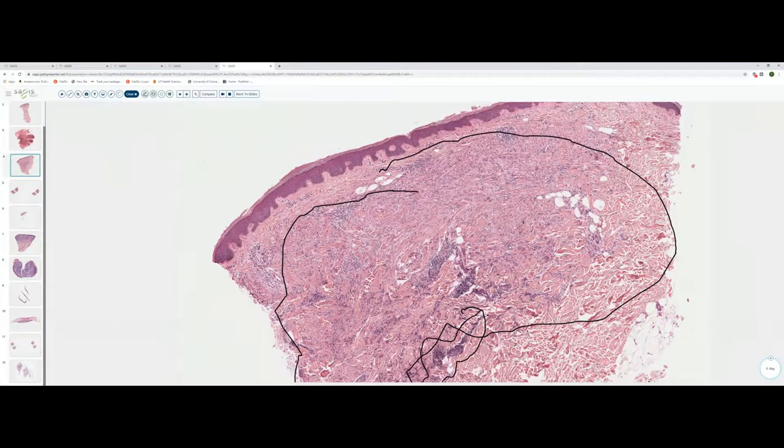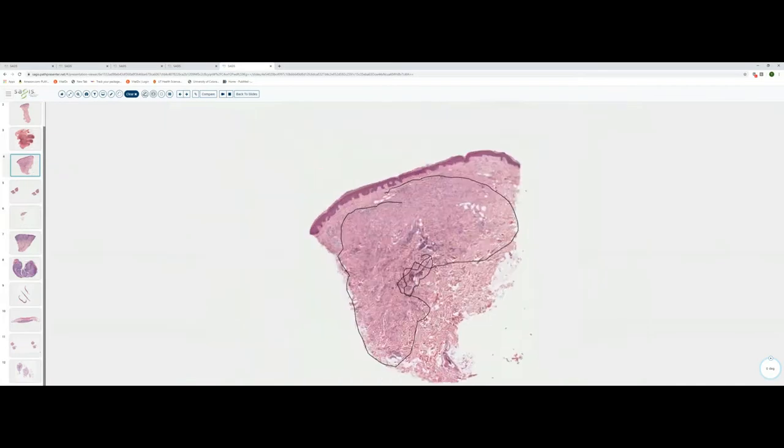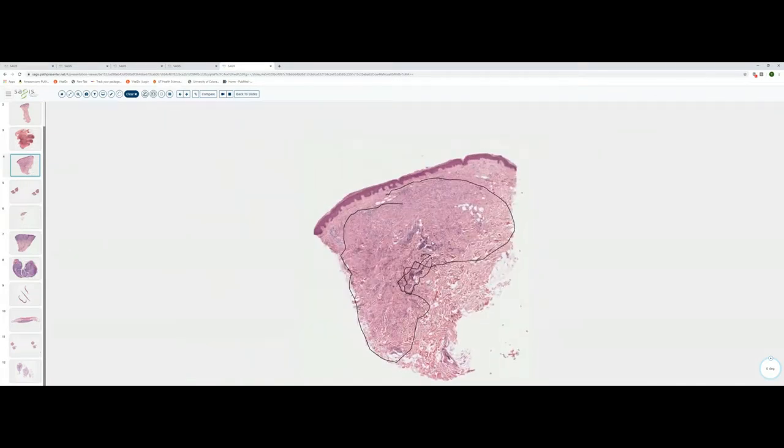GA doesn't scar, unlike necrobiosis lipoidica. So the collagen bundles in GA are not really degenerated, they're just separated from one another by mucin. So this is a pretty classic example of GA. GA is in that group of disorders that gives you a busy dermis look, kind of a hypercellular dermis. And on scan, when you see that appearance where it looks like there are a lot of cells present interstitially within the dermis, you need to think about GA. You should think about a blue nevus. You should think about Kaposi sarcoma. You should think about metastatic carcinoma.